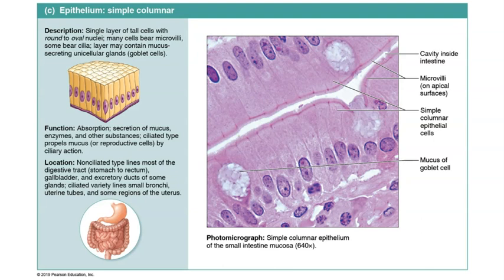Simple columnar epithelium is a tissue featuring a single layer of tall column-shaped cells. Simple columnar epithelium without cilia functions in absorption and secretion, and is primarily found in the digestive tract, beginning at the stomach, continuing through the intestines, and all the way to the last segment of the large intestine called the rectum.